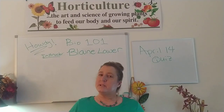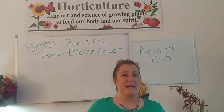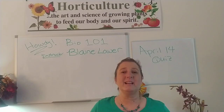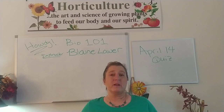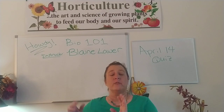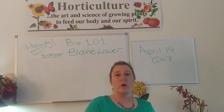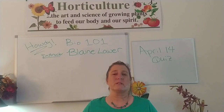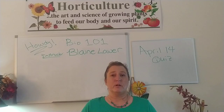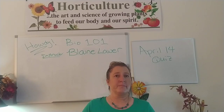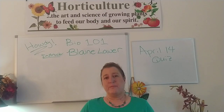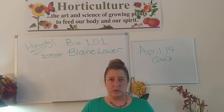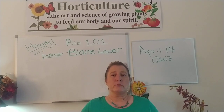Number one: which man-made and environmentally made disaster happened in the 1930s that led to a mass migration from rural to urban — in other words, it created cities in the United States? Number two: what did families do during World War Two to supplement their diet, their food source?